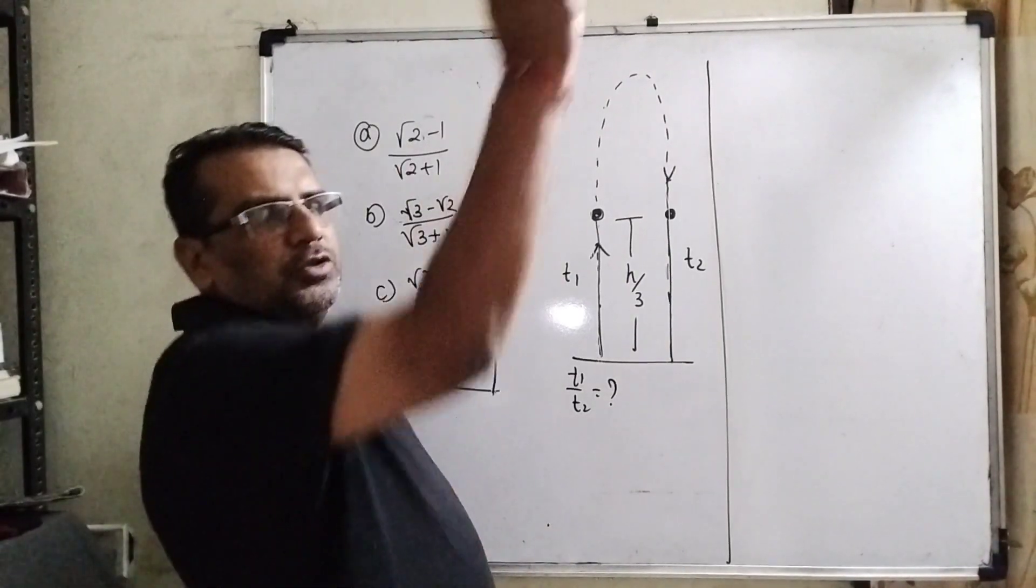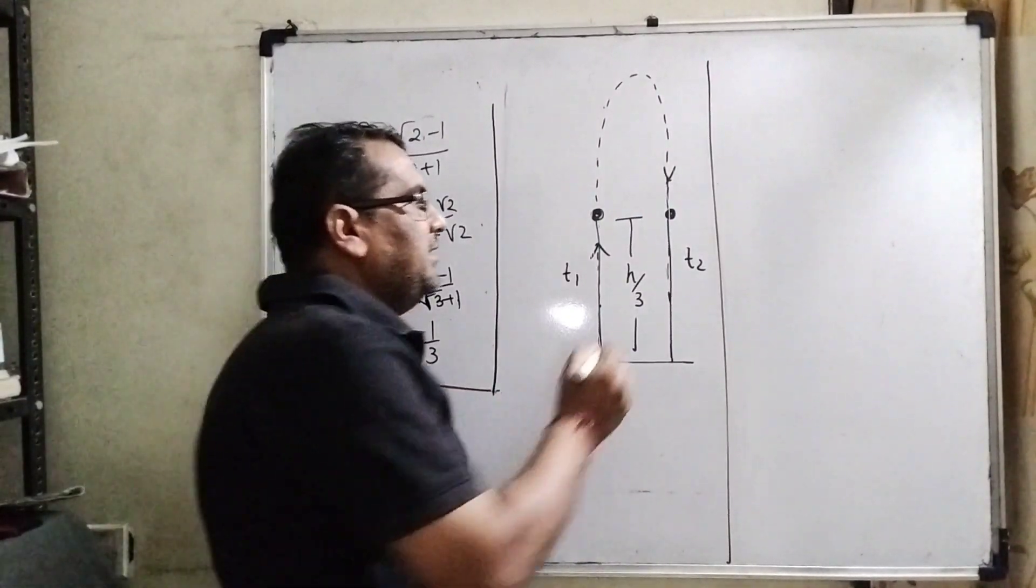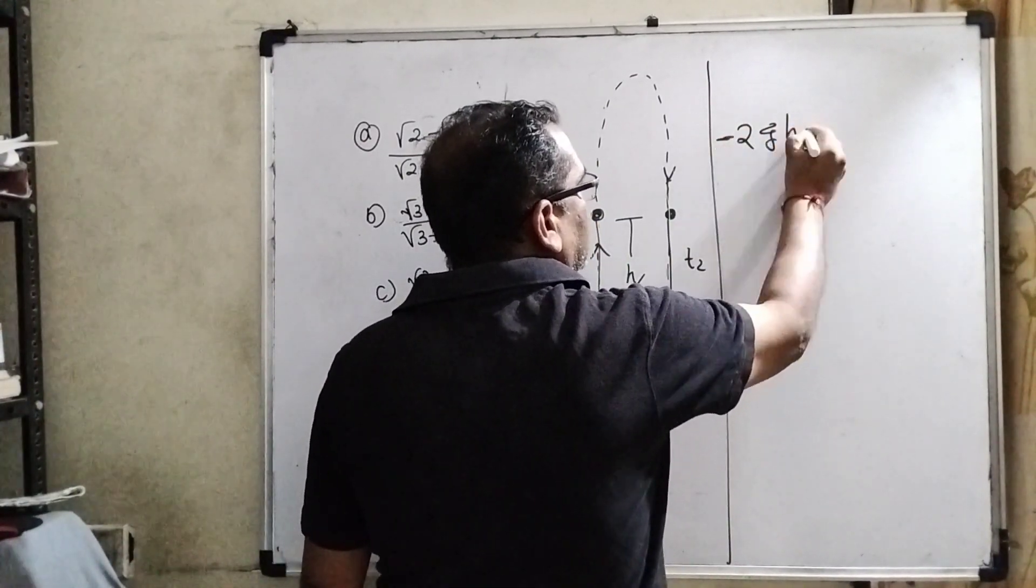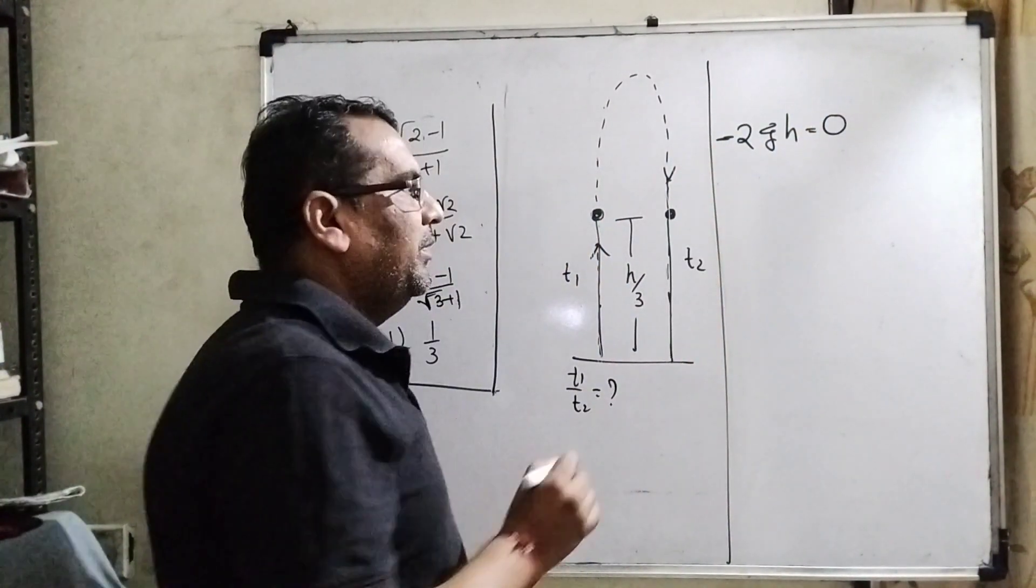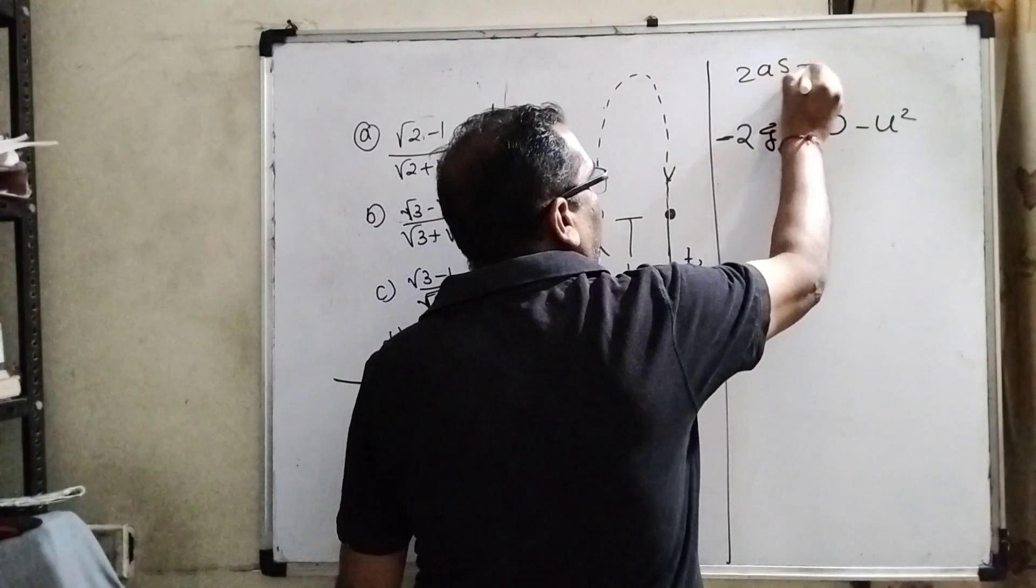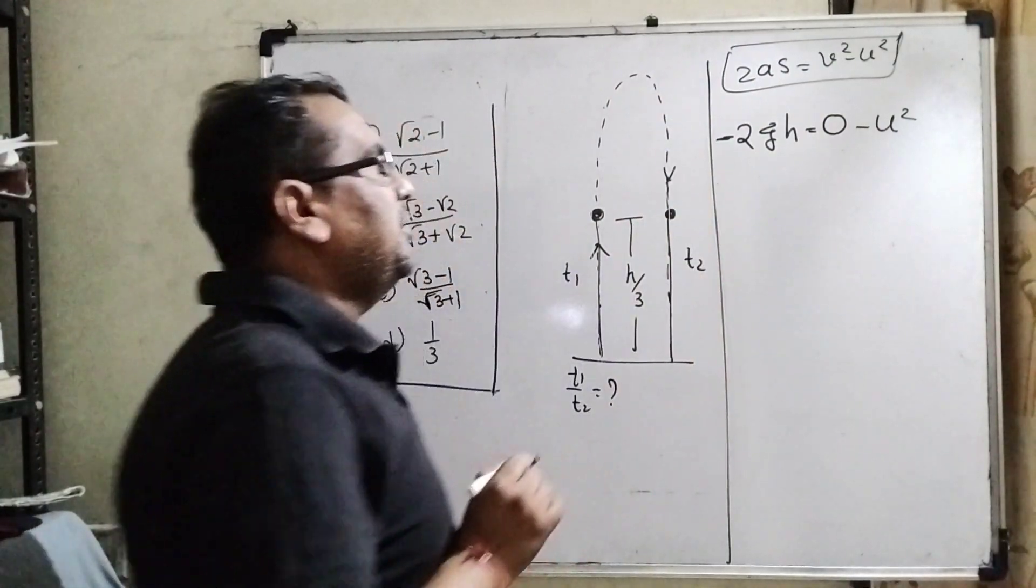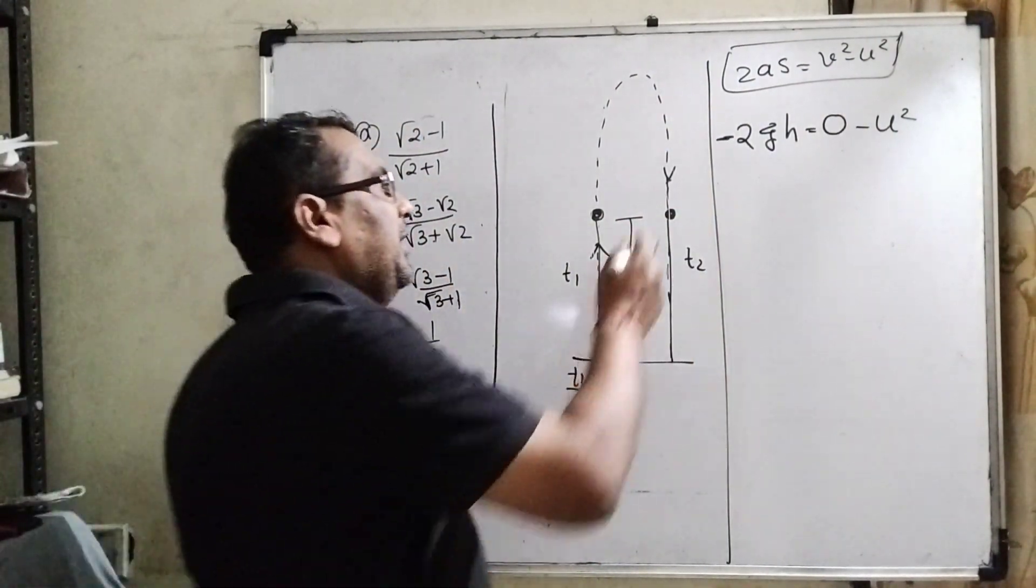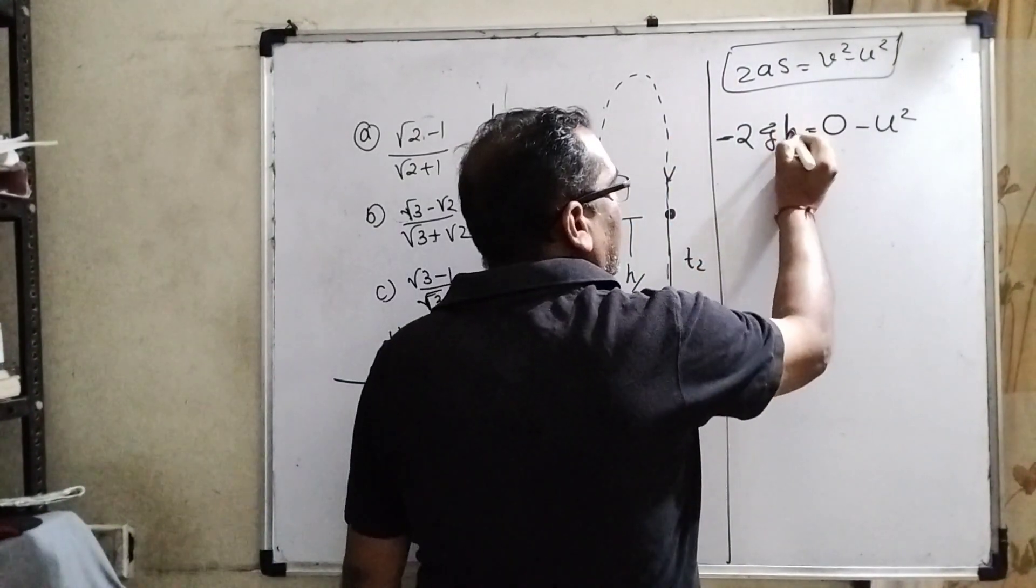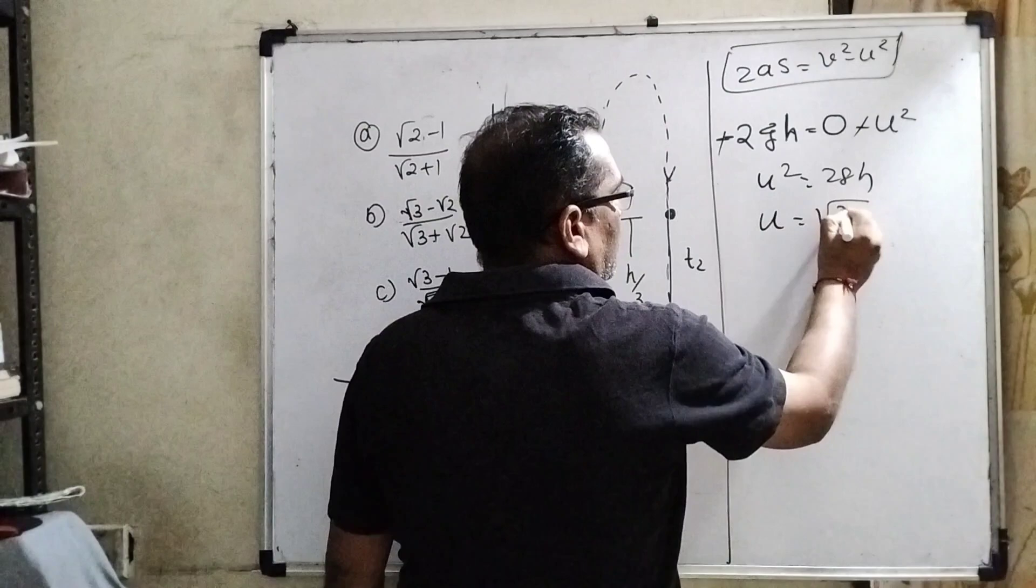As we know, when any object is thrown upward, at maximum height the velocity becomes 0. Using the third kinematic equation 2As = v² - u², where v = 0, A = -g, and s = h, we get u² = 2gh, so u = √(2gh).